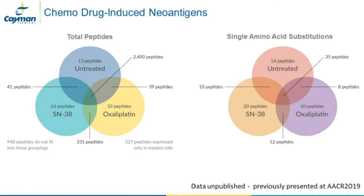In the chemotherapy drug experiment, we used only the canonical human database. As expected, most of the peptides in the center of the Venn diagram were common to all conditions, and treatment groups shared more peptides with each other than with the untreated. We also looked at single amino acid changes from the canonical human database, which is as close as we could get to neoantigen identification without sequencing transcripts—an interesting exercise in searching for neoantigens, even though we didn't take it all the way to sequencing.